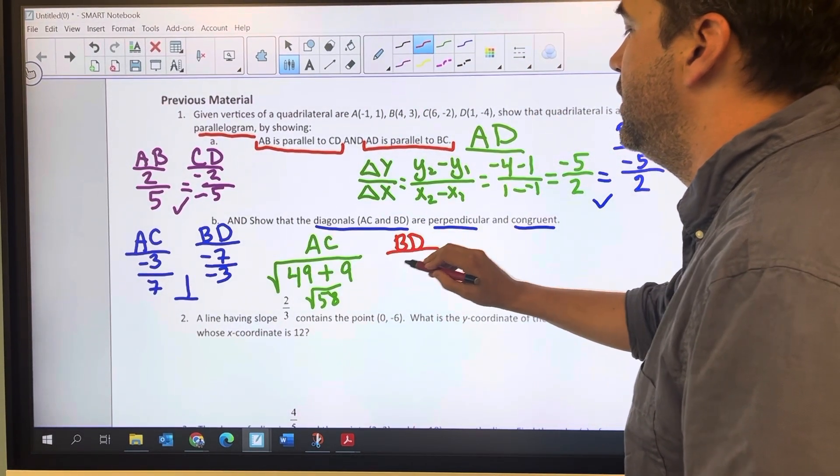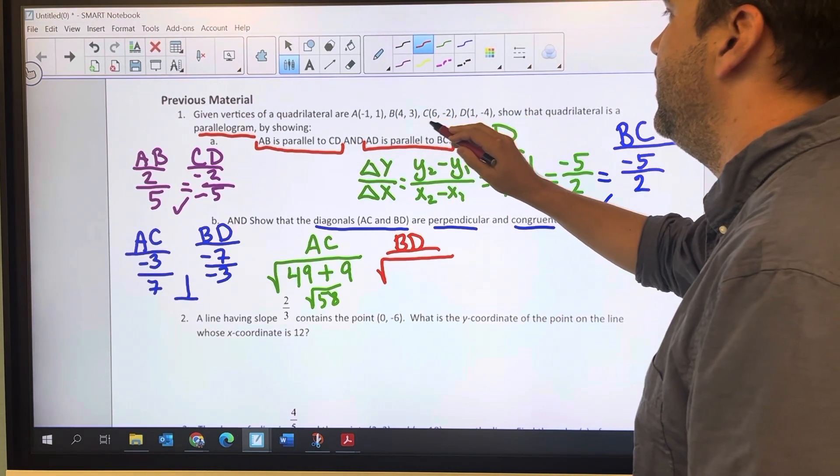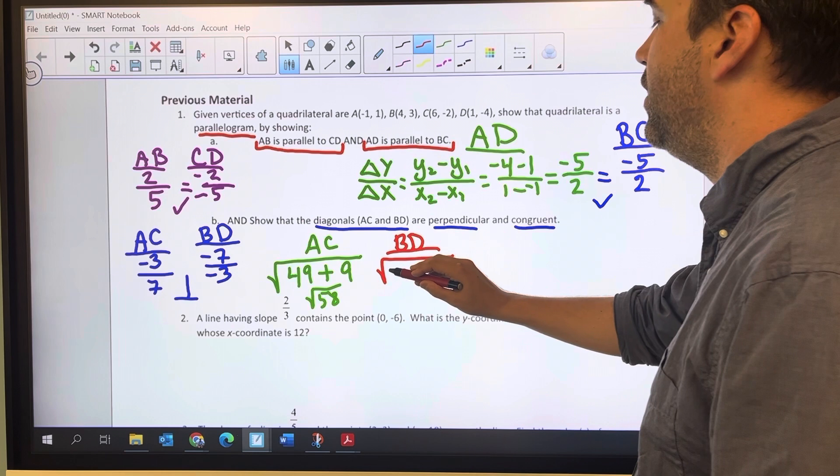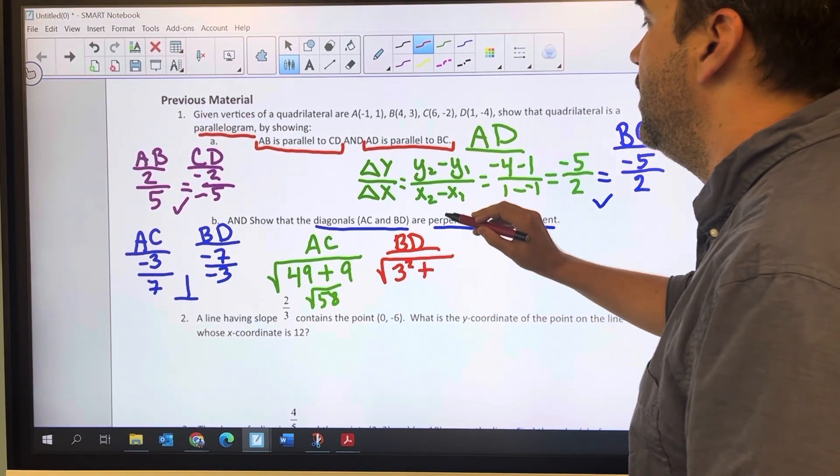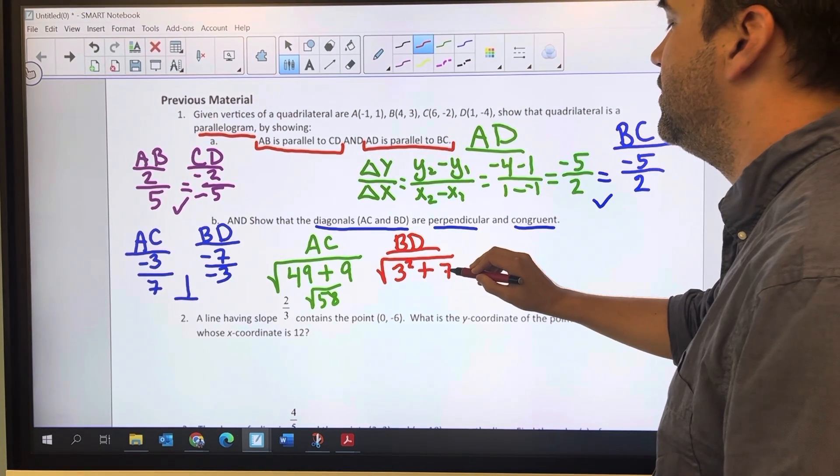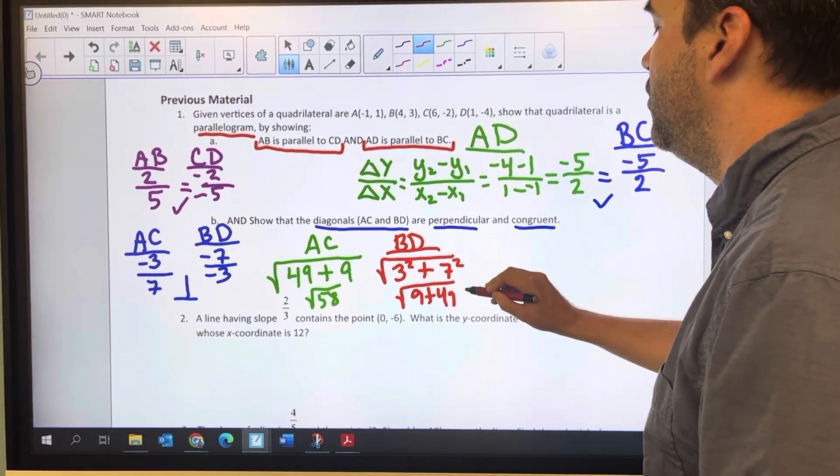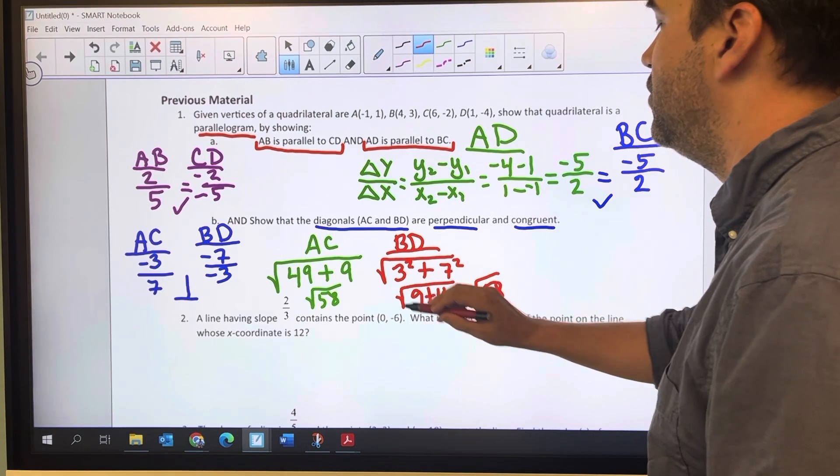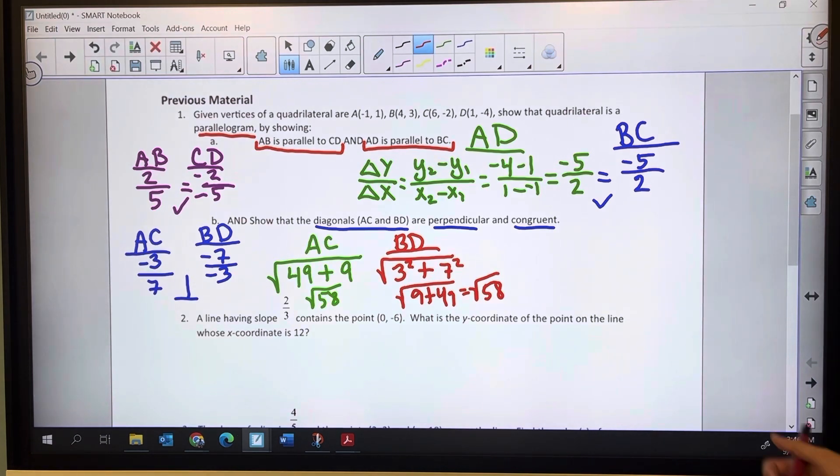And BD is going to be the square root of BD. The x's go from 4 to 1, that's the distance of 3 squared, which is 9. And then the y's go from 3 to negative 4, which is the distance of 7 squared. So again, we've got that 9 plus 49, or the square root of 58. So the lengths, the distances are equal, which means that they are congruent. Perpendicular looking at the slopes, congruent looking at the distances.